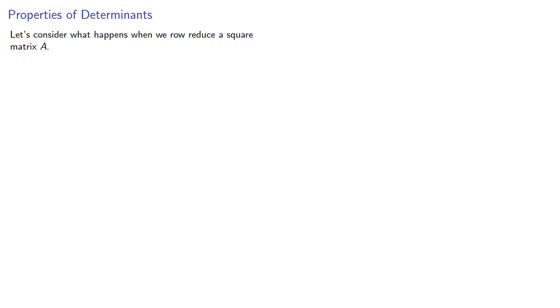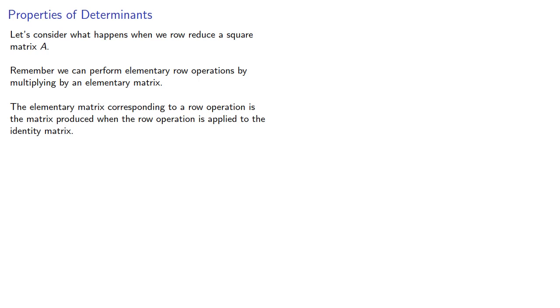Let's consider what happens when we row-reduce a square matrix A. Remember, we can perform elementary row operations by multiplying by an elementary matrix. And the elementary matrix corresponding to a row operation is the matrix produced when the row operation is applied to the identity matrix.